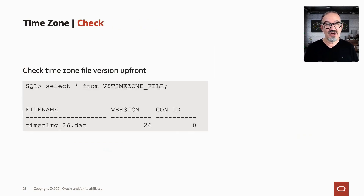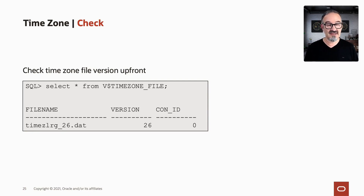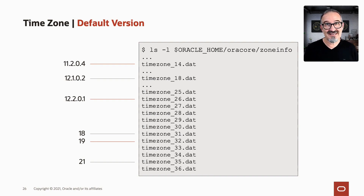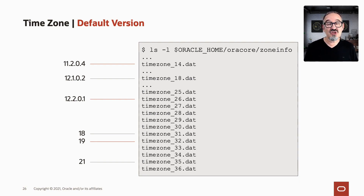Always check in such cases the time zone file version of the source, and compare it to V$TIMEZONE_FILE in the destination. For reference: 11.2.0.4 came with time zone 14; 12.1.0.2 with time zone 18; 12.2.0.1 with time zone 26; 18c with time zone 31; 19c with time zone 32; and 21c has time zone 35 by default.